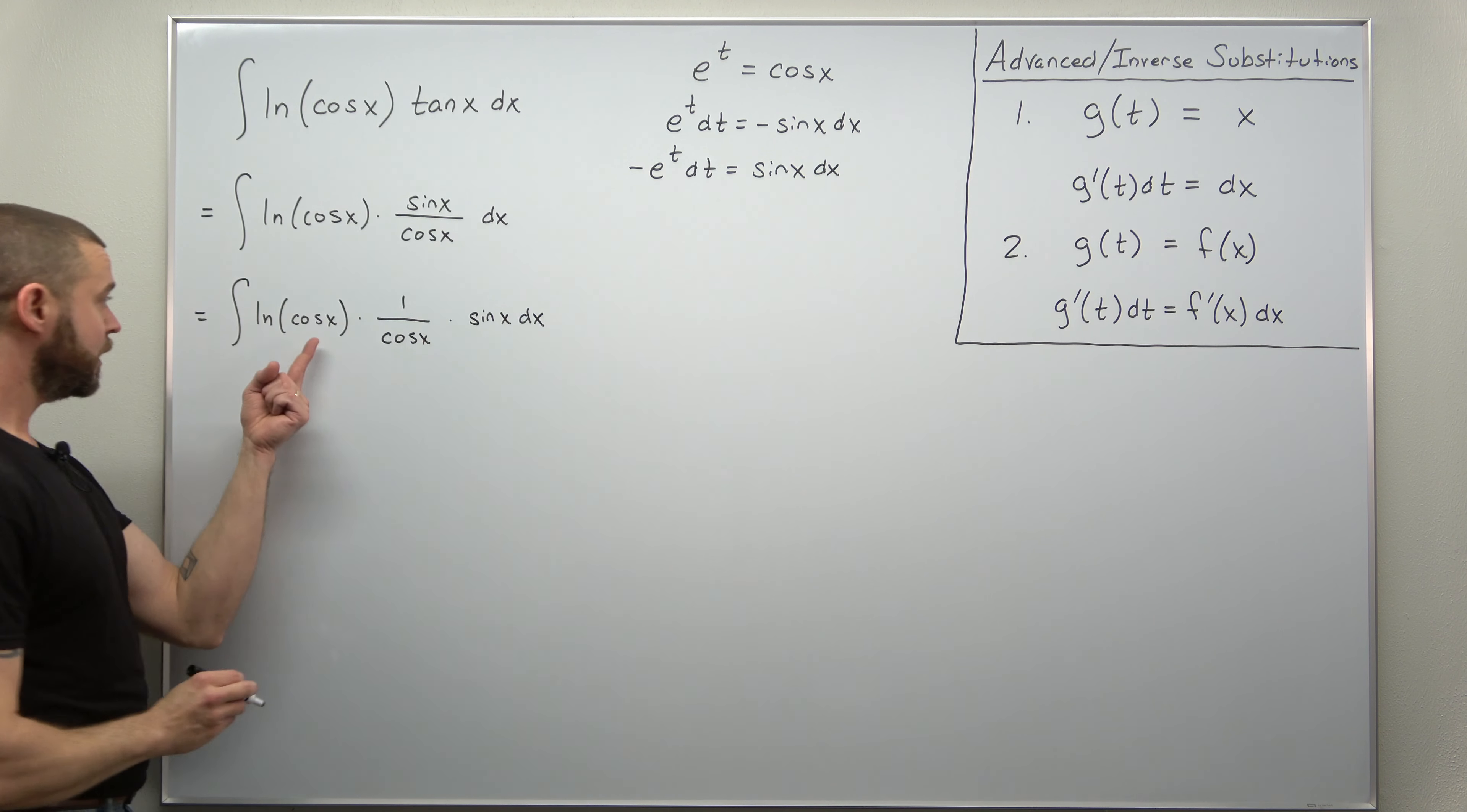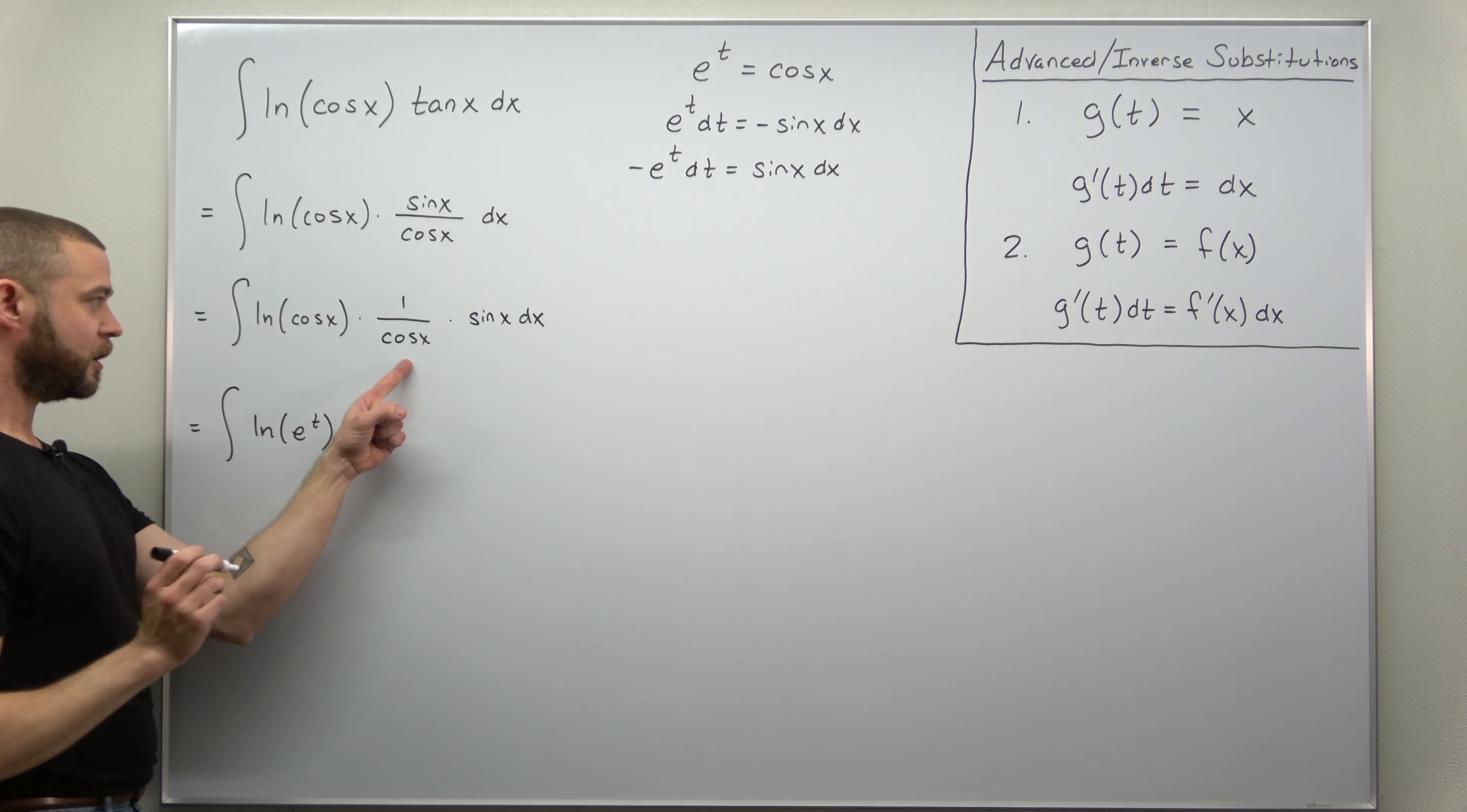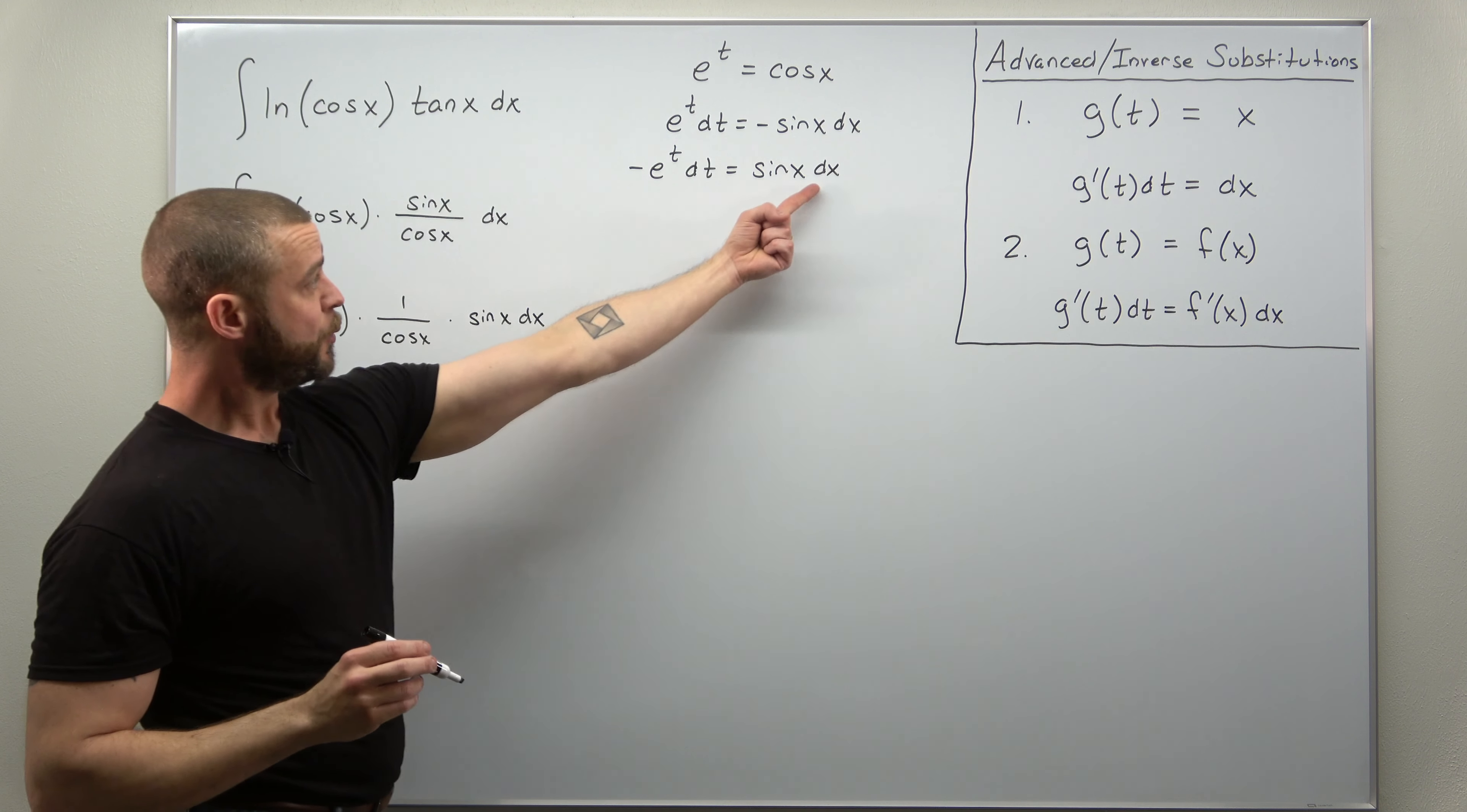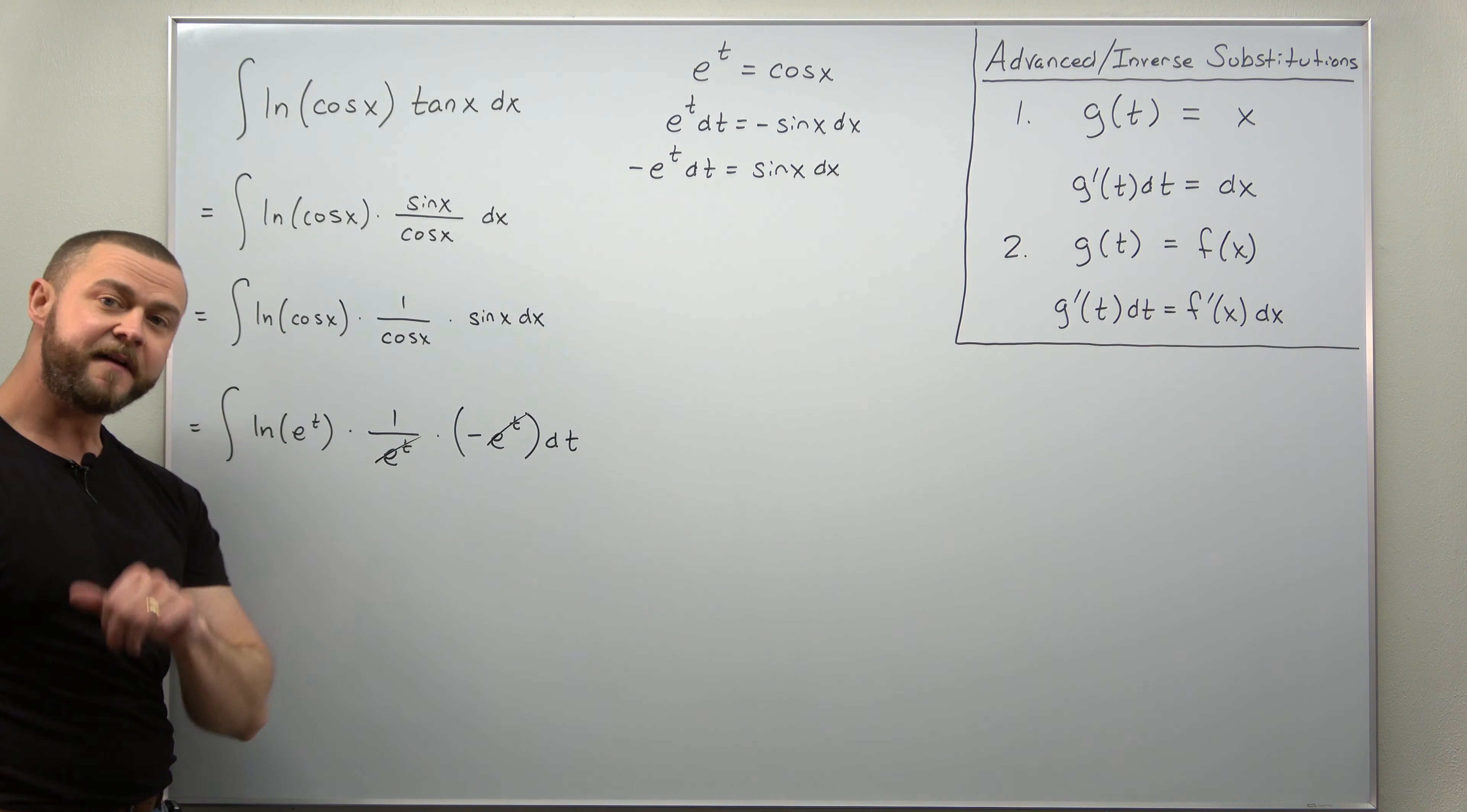Let's go ahead and plug that in. Everywhere cosine of x, that's going to be replaced with e to the t. Let's take it term by term. So we'll get natural log of e to the t, which will cancel. Also here we're going to replace cosine of x with e to the t, so we get one over e to the t, and then sine of x dx. We get to replace that with negative e to the t dt. And notice what happens here. Those exponentials cancel out and we get a very simple integral.